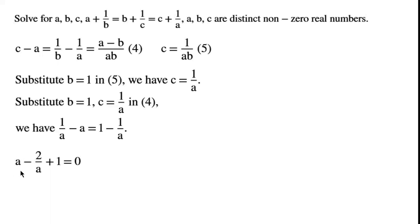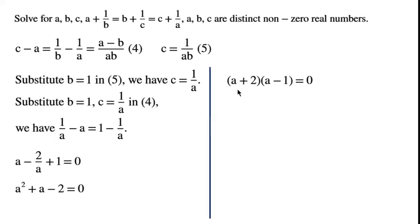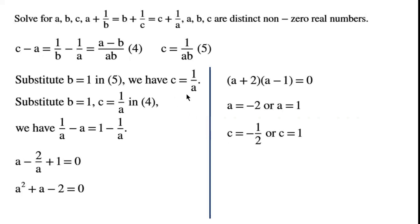By rearranging the equation, we write A minus 2 over A plus 1 equals 0. Multiplying both sides by A gives A squared plus A minus 2 equals 0. Factorizing the left-hand side gives A plus 2 times A minus 1. So either A equals minus 2 or A equals 1. Since C equals 1 over A,